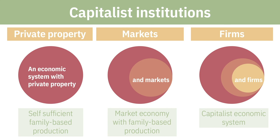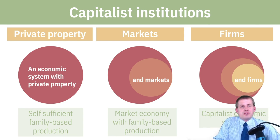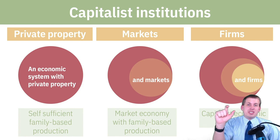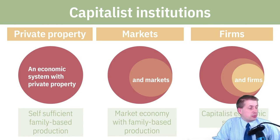Once you layer the firm institution on top, you get another layer that makes the system even more efficient. Firms allow specialization: instead of the Ingalls family focusing on everything, they can create a company focused just on dairy, become a dairy farm, sell all their milk, and buy the wheat and eggs they need. By specializing, they get really good at one thing, grow, make more profit, gain more leisure time, and have more avenues for technological development. That's the story of capitalism's growth through these three interlocking institutions.